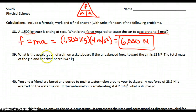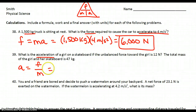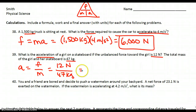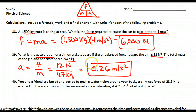Number 39: what is the acceleration of a girl on a skateboard if the unbalanced force toward the girl is 12 newtons and the total mass of the girl on her skateboard is 47 kilograms? Acceleration equals force divided by mass. The force is 12 newtons and the mass is 47 kilograms. That gives us an acceleration of 0.26 meters per second squared.